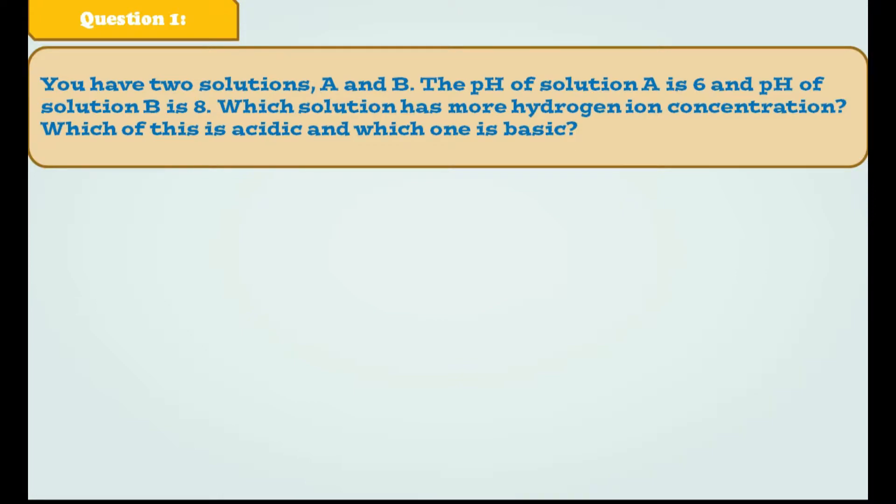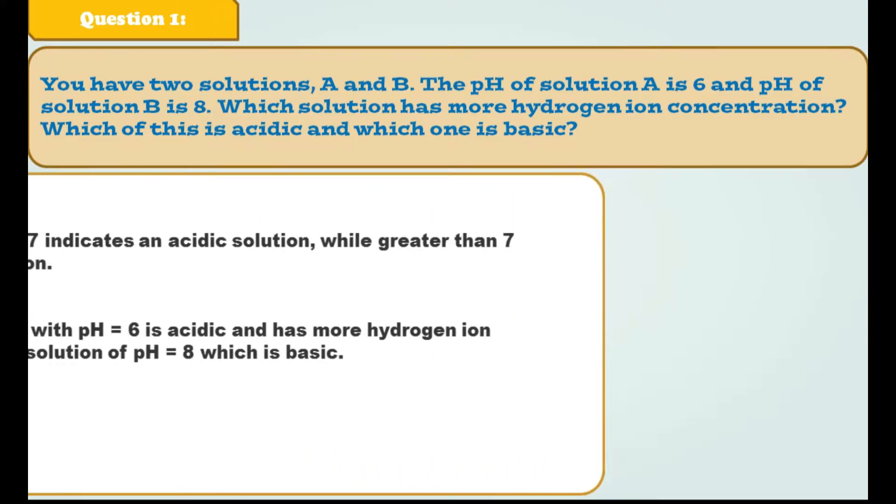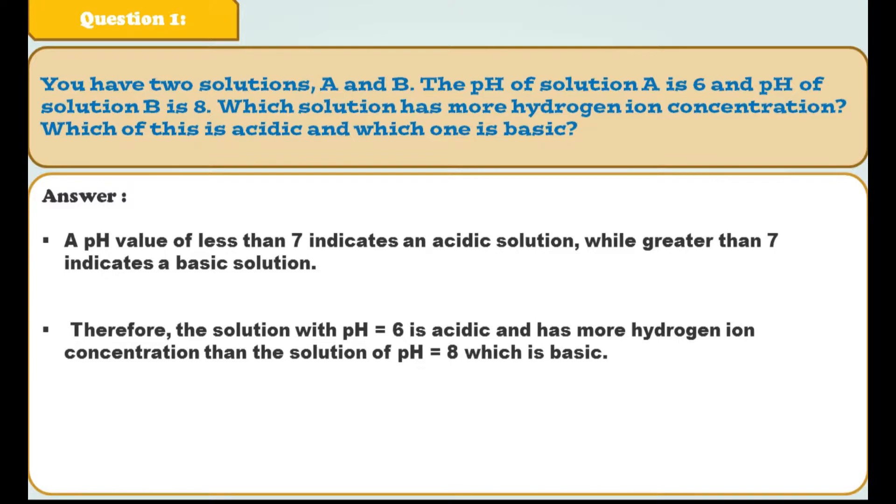So now let's discuss question number one. You have two solutions A and B. The pH of Solution A is 6 and pH of Solution B is 8. Which solution has more hydrogen ion concentration? Which of these is acidic and which one is basic? So as I already told you in my previous video lectures that solution having pH less than 7 is known as acidic and solution having pH more than 7 is known as basic solution. So solution A has pH of 6,